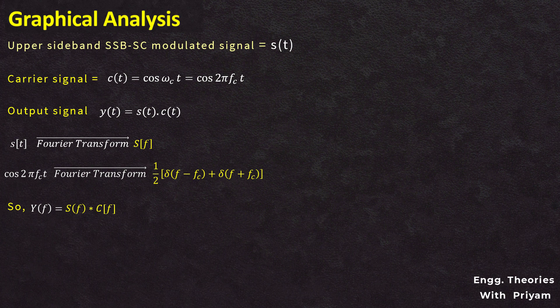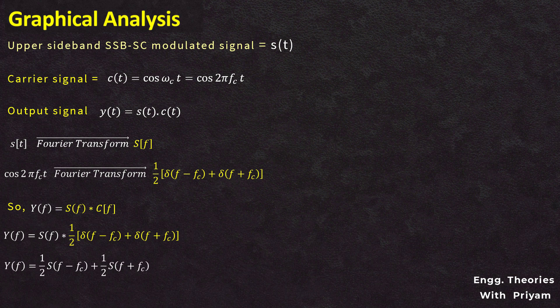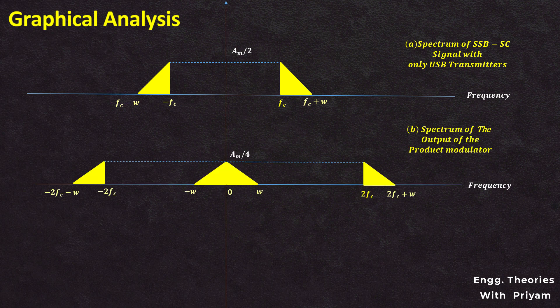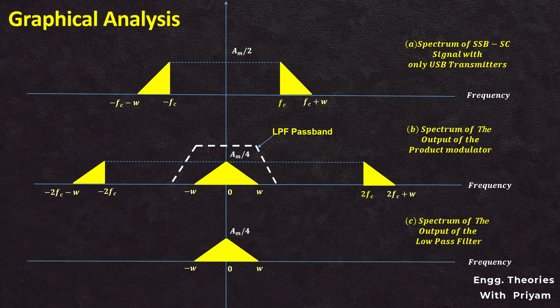Replacing C(f) with the Fourier transform of the carrier signal and performing the convolution results in the modulated signal's spectrum being frequency-shifted to the carrier frequency fc. This gives the frequency domain representation of the product modulator output. When passed through a low-pass filter with cutoff ±fc, only the message signal component is allowed through, completing the demodulation of the SSBSC modulated signal.